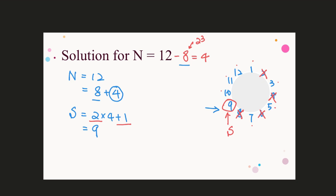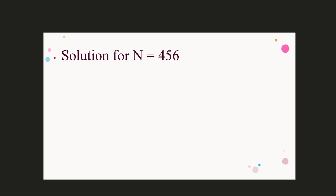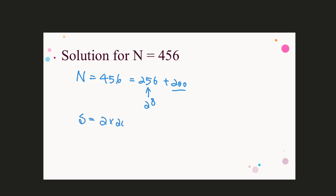So we derive a quicker method of finding S. Now we are able to handle the original problem — the big number of 456. This is not a power of 2, so we need to find the power of 2 just less than this, which is 256 — that is 2 to the power of 8. Therefore, 456 equals 256 plus 200. This 200 helps us find S, which is 2 times 200 plus 1, and it is 401. The person with the number 401 is the survivor of this game.